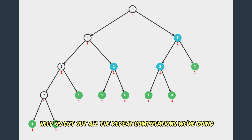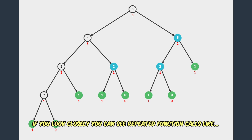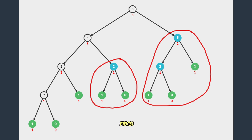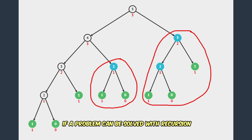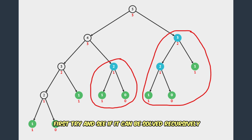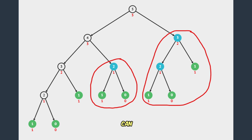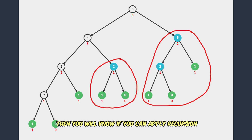Dynamic programming will help us cut out all the repeat computations we're doing. This is also where overlapping subproblems pop up — if you look closely, you can see repeated function calls like Fib2 and Fib3. In simple terms, if a problem can be solved with recursion, then it will exhibit overlapping subproblems. If these two conditions are satisfied, then dynamic programming can solve the problem much more efficiently. When dealing with a problem, first try and see if it can be solved recursively — try applying divide and conquer. See if breaking the problem down to the simplest subproblem can eventually build up to the optimal solution. If you can do this, then you can apply recursion, and you'll know for sure the problem can be solved with dynamic programming.